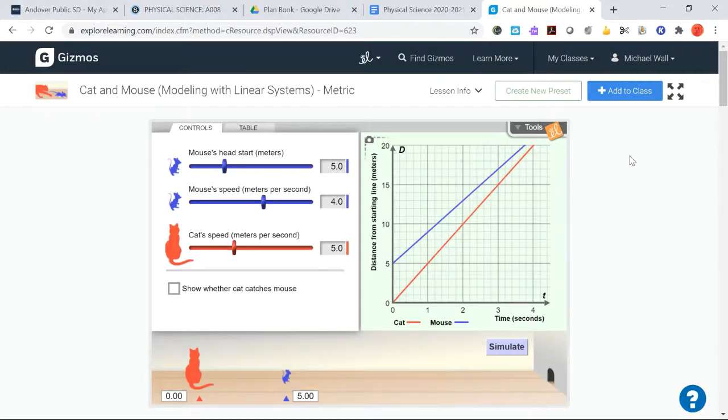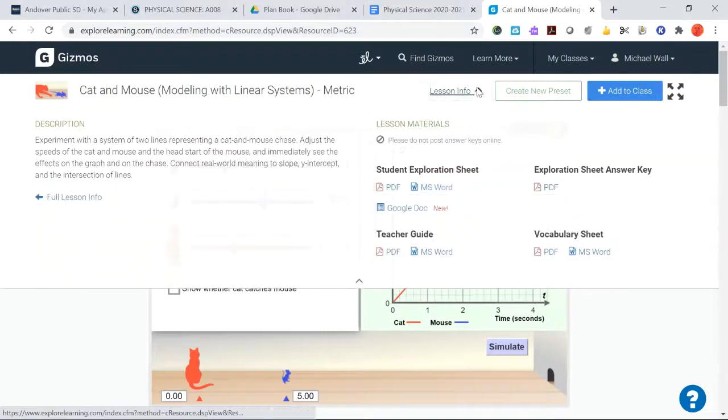So here it is. As always, we want to go under the lesson info and we'll pick one of these student exploration sheets, the PDF version, the Word, or the Google Doc.